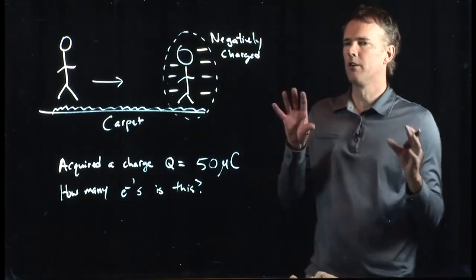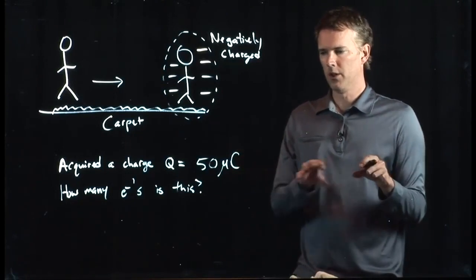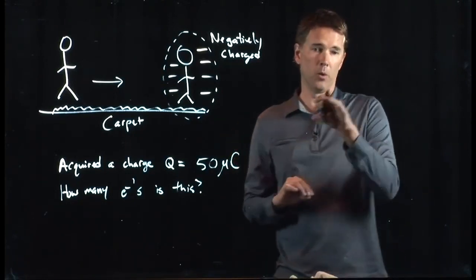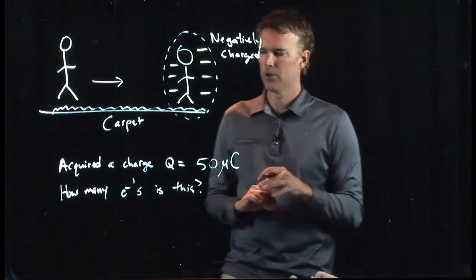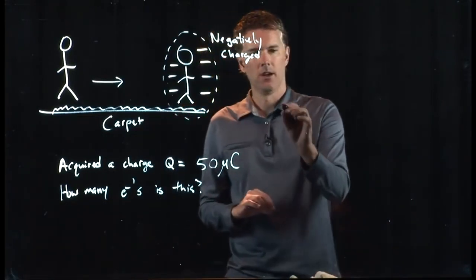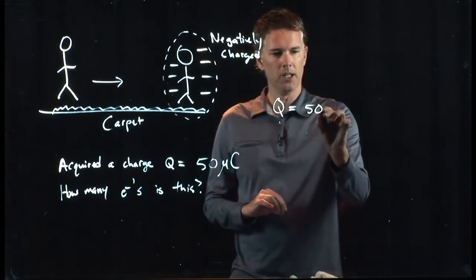We're just trying to convert from one unit to another. The unit that we're in is microcoulombs. The unit that we want to get to is electrons. Electrons, of course, have charge. We need to figure out what that conversion is. Let's start with the easy one, though.